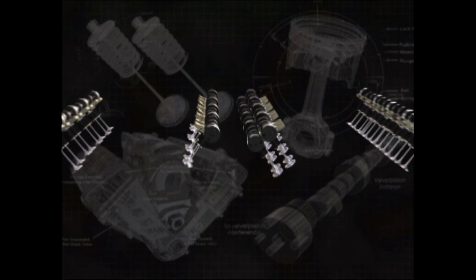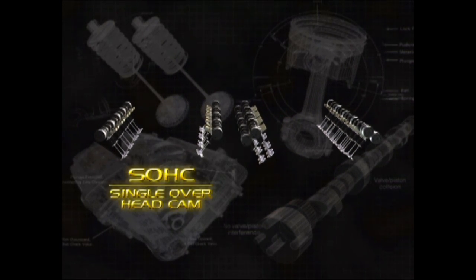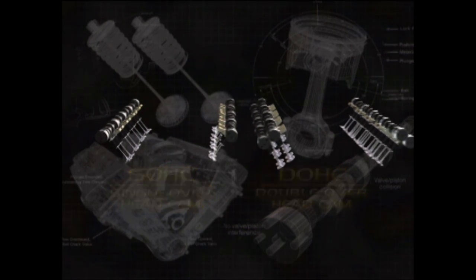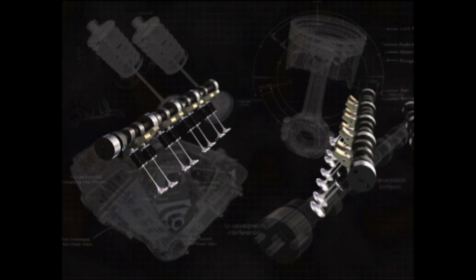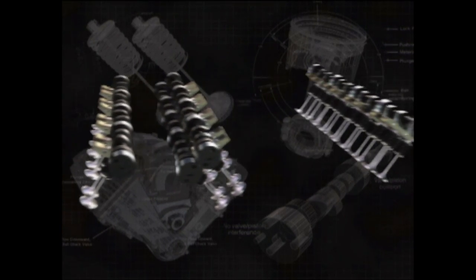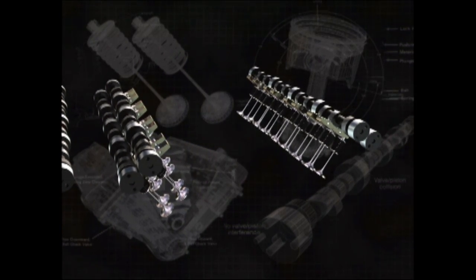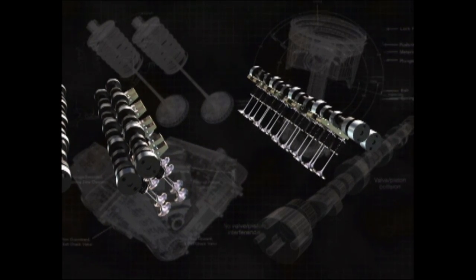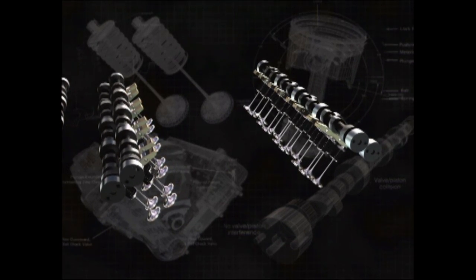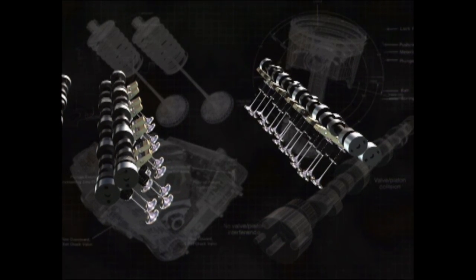Overhead cam engines come in two forms: the SOHC, Single Overhead Cam, and the DOHC, Double Overhead Cam. SOHC engines typically have the basic two valves per cylinder but sometimes may have three. The DOHC engine has two cams per head — one intake cam and one exhaust cam. The big advantage with the DOHC is the ability to have at least four valves per cylinder.